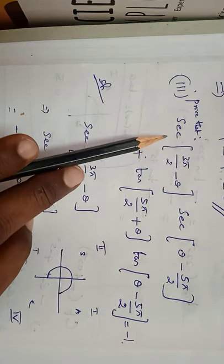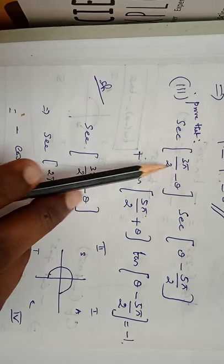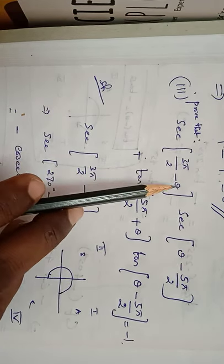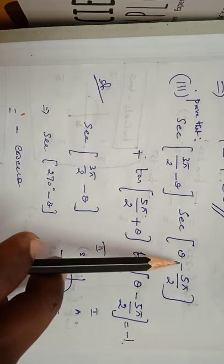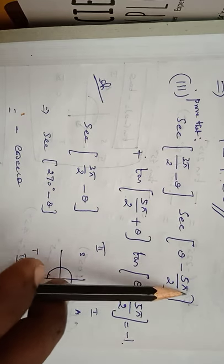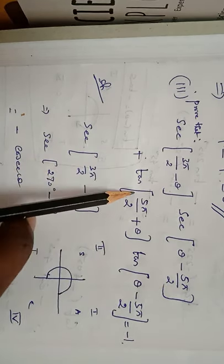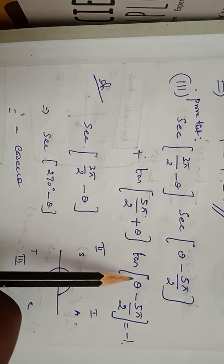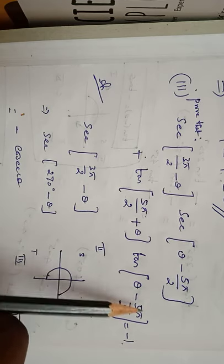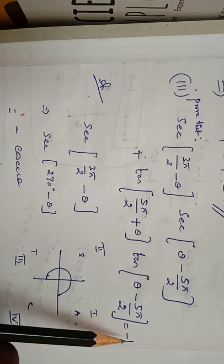Prove that sec(3π/2 − θ) · sec(θ − 5π/2) + tan(5π/2 + θ) · tan(θ − 5π/2) = −1.